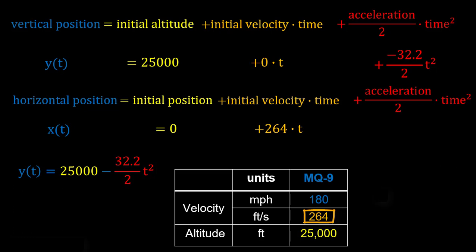And our acceleration horizontally is just going to be 0 because, of course, this unguided bomb also is unpropelled. So that gives us our equation for X of T, which is just going to be 264 T.